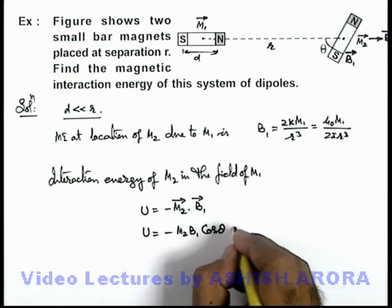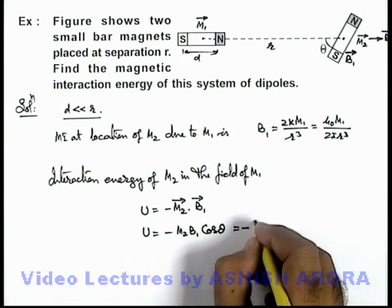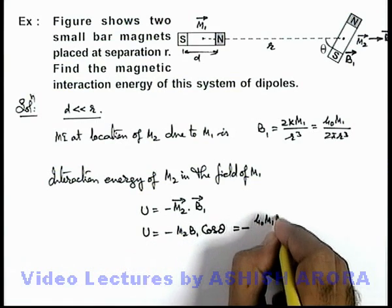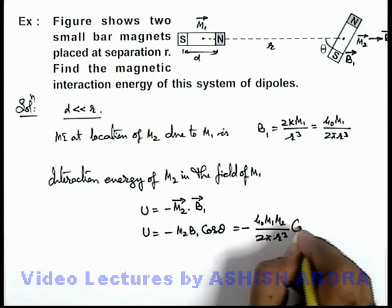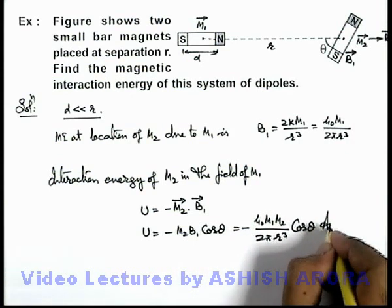If we substitute the values, we get minus μ₀ m1 m2 by 2π r³ cos θ. That will be the answer to this problem.